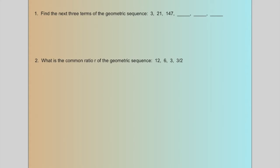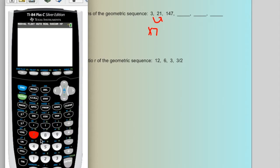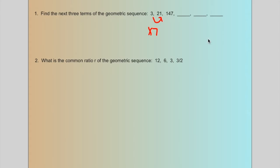Example 1 says find the next three terms of the geometric sequence. To go from 3 to 21, then 21 to 147, that's times 7. You can verify by taking 21 divided by 3 to find the common ratio. So times by 7: 147 times 7 is 1,029; 1,029 times 7 is 7,203; and 7,203 times 7 is 50,421. The common ratio is 7.